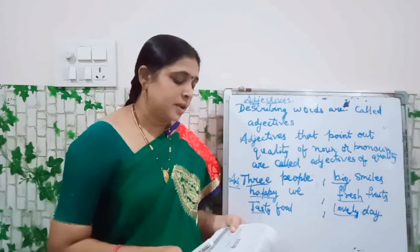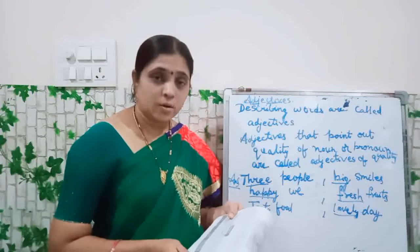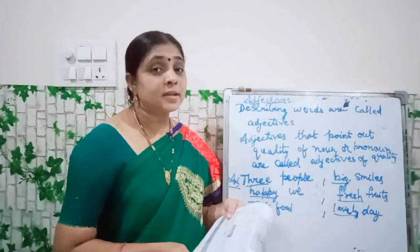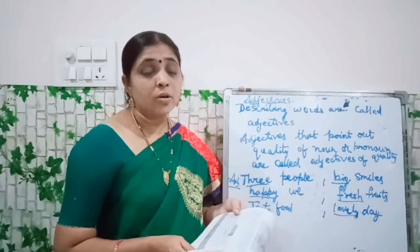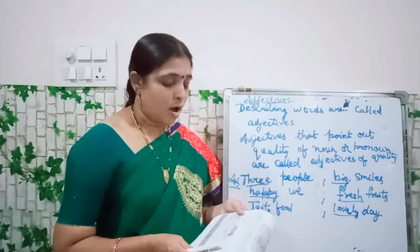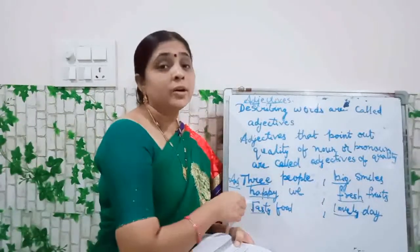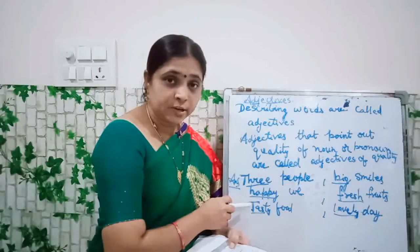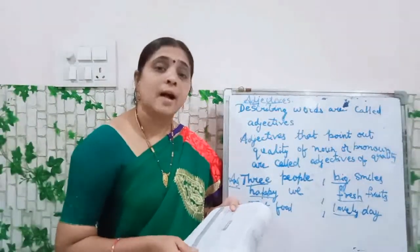Remember this: Describing words tell us more about nouns or pronouns. Describing words are called adjectives. Adjectives that point out the quality of a noun or pronoun are called adjectives of quality. These adjectives point out the quality of the noun or pronoun, so they are called adjectives of quality. Adjectives of quality answer the question 'what kind?'